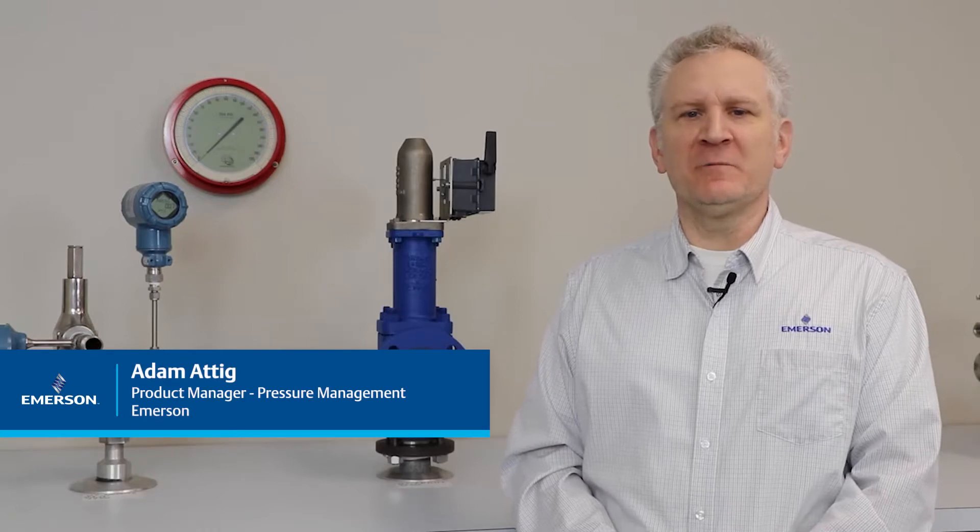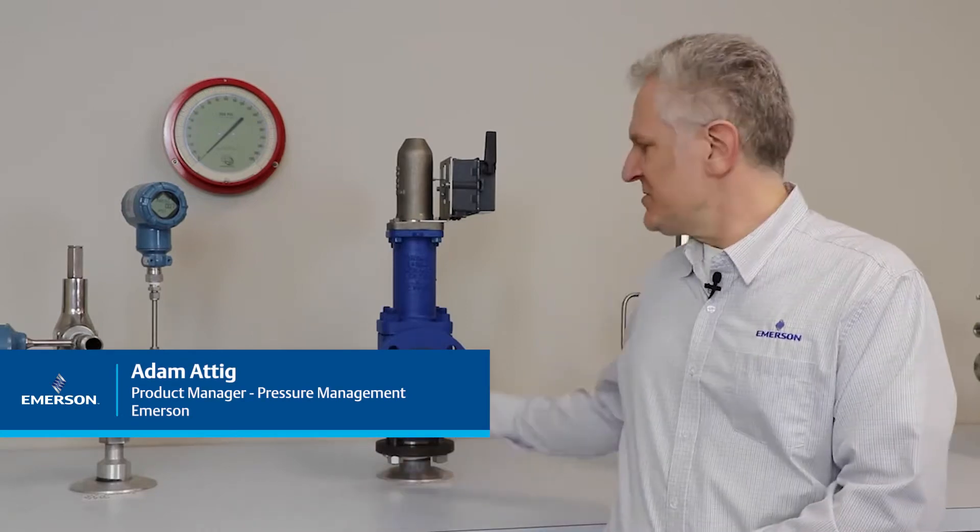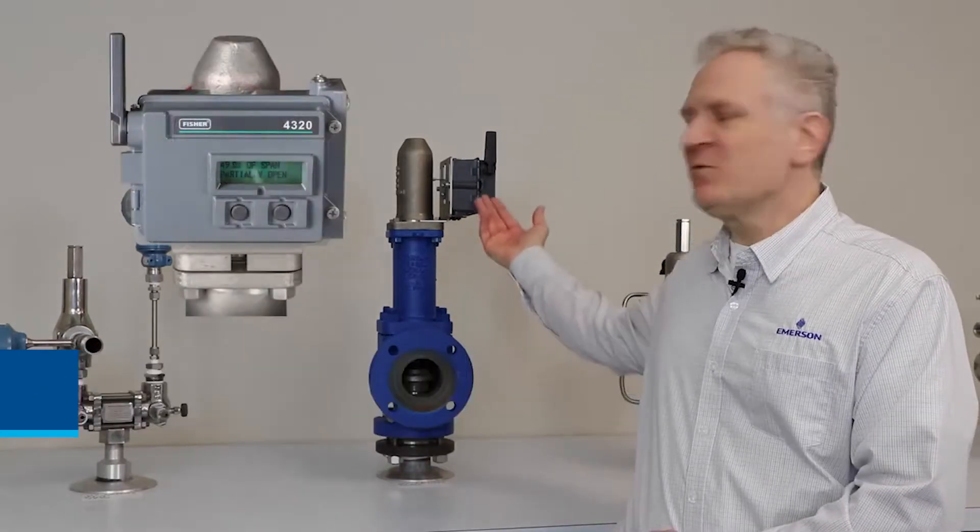The last example of a monitor PRV we will discuss is the Crosby J-Series with the Fischer 4320 position monitor. The Fischer position monitor is a linkage-less and easy-to-install design that is magnetically coupled to the valve trim. The monitor provides the position of the valve trim indicating the valve is lifted and an overpressure event has occurred.